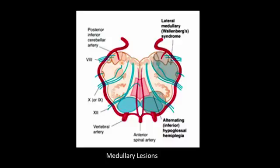You will have contralateral medial lemniscus involvement, so there will be loss of position and vibration sense on the opposite side because the dorsal column has crossed over. Then you will have ipsilateral tongue paralysis. That is your medial medullary syndrome.